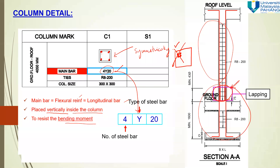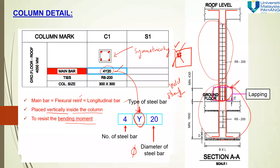When you go to site — maybe as a resident engineer or during internship as a young site engineer — you must be able to read the drawing and check whether workers have installed the right number of bars, the right type of steel bar, and whether the diameter of the steel bar installed is correct.